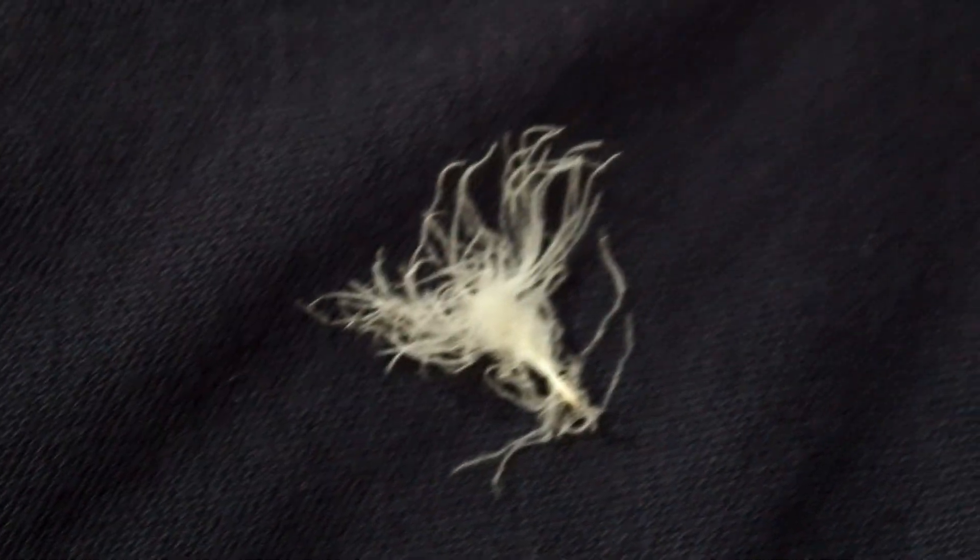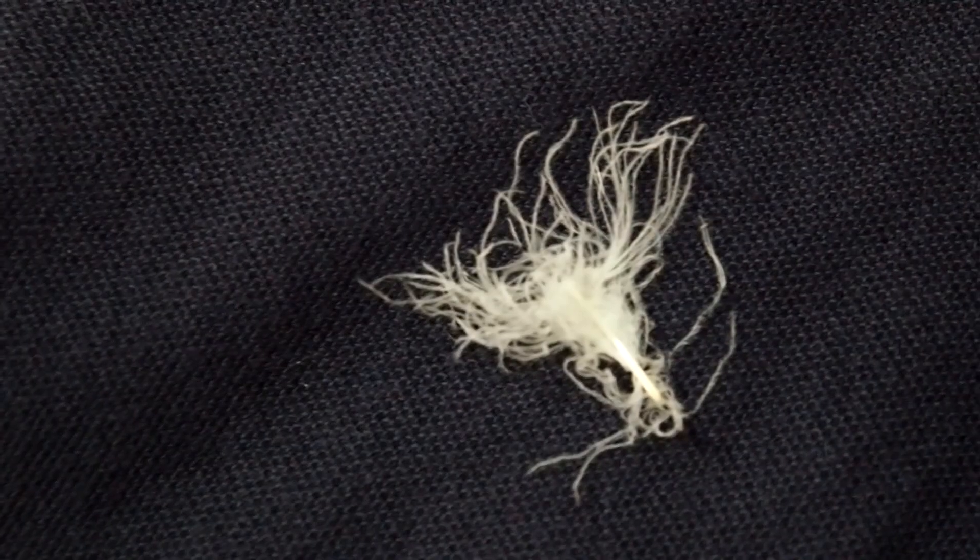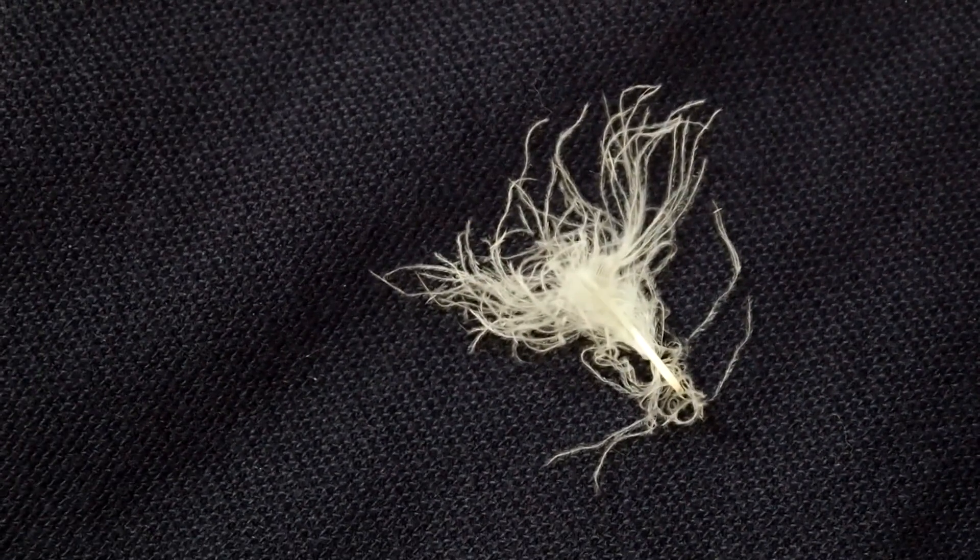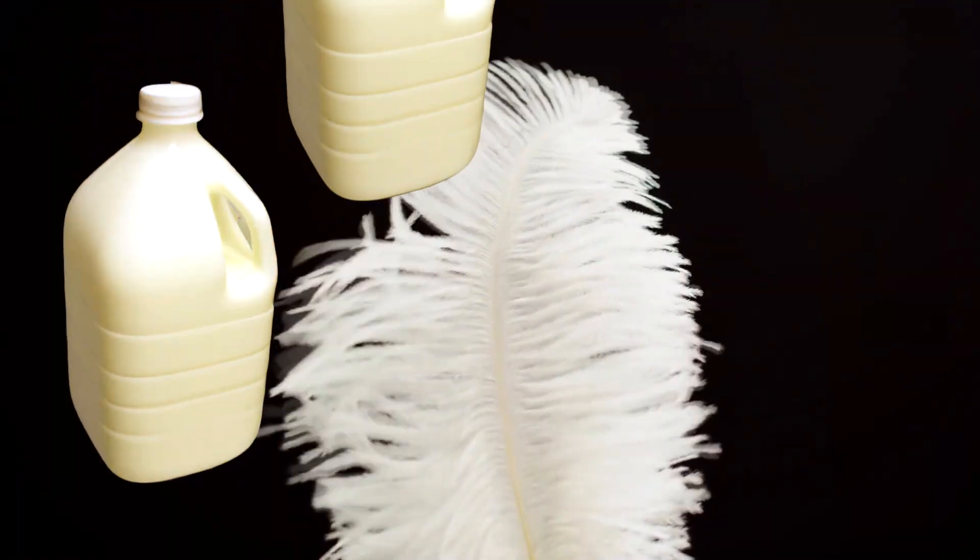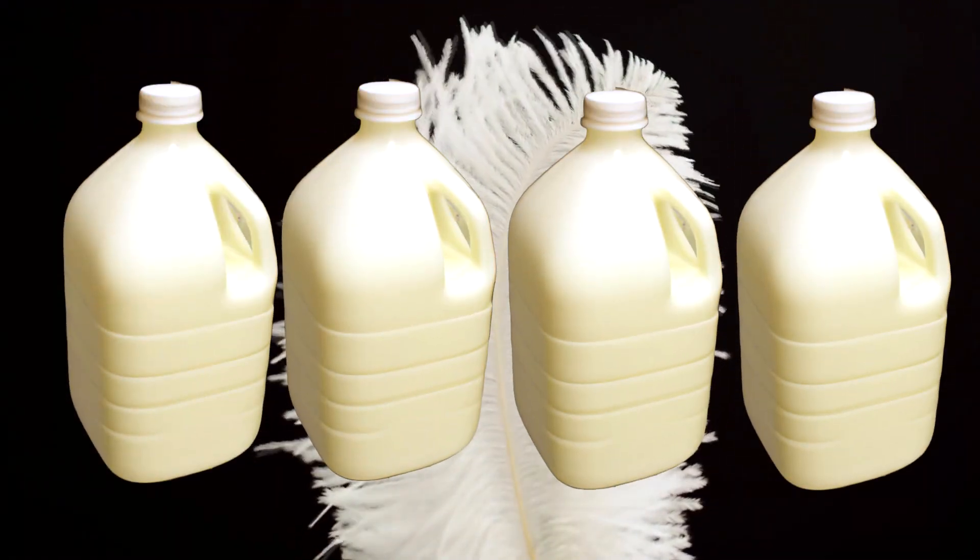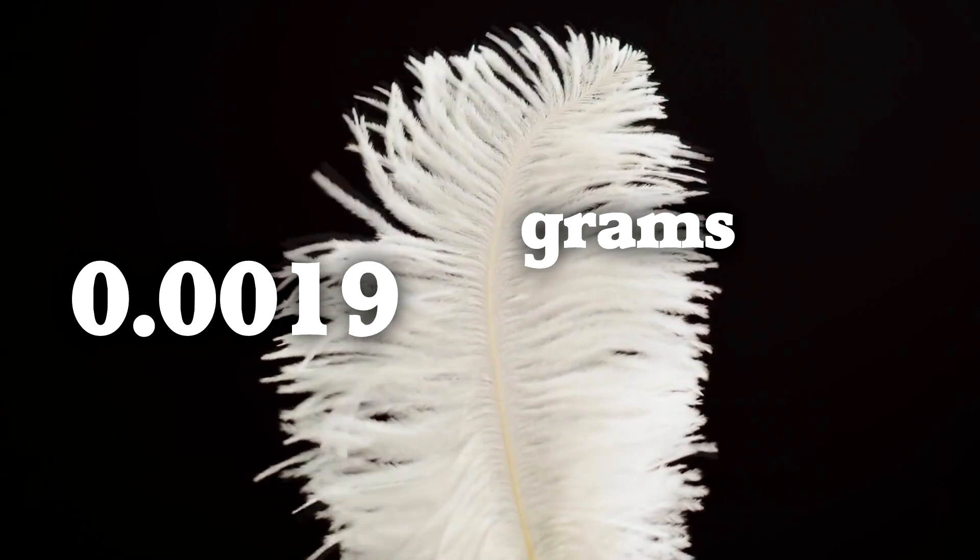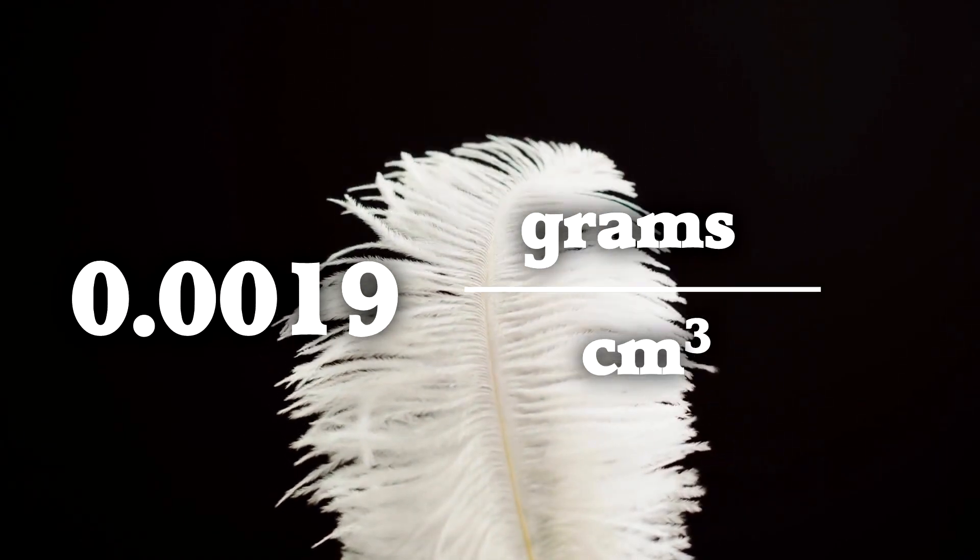The highest scoring feathers are Goose Down feathers, which will fill 900 cubic inches with just one ounce of feathers. Imagine four gallon milk jugs filled with one ounce of feathers. This gives a density of 0.0019 grams per cubic centimeter.